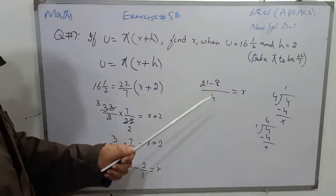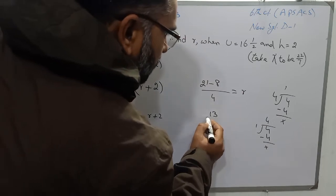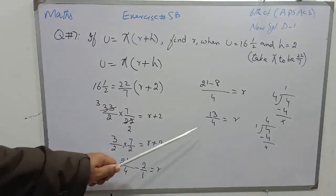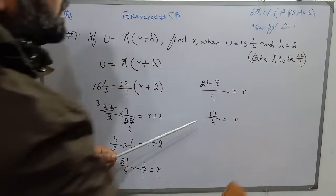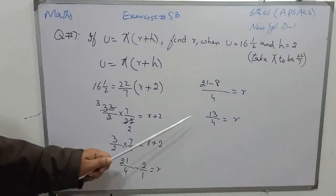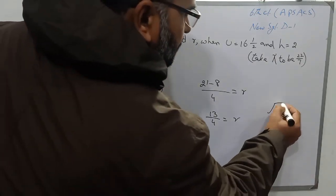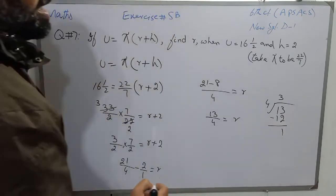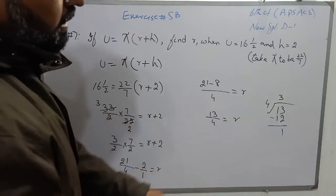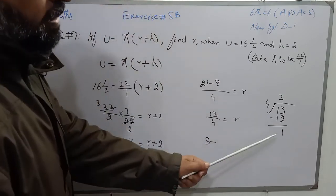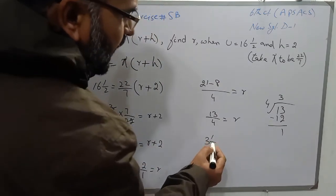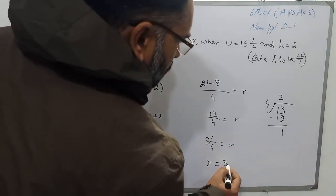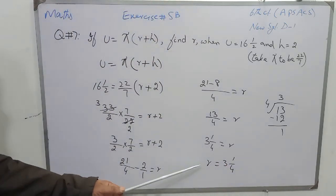Subtract 8 from 21 and we have 13, so 13 over 4 is equal to r. Now divide 13 by 4 to convert this improper fraction into a mixed number: 4 threes are 12, subtract 12 from 13 and we have remainder 1. The quotient is the whole number, the remainder is the numerator, and the divisor is the denominator. So r is equal to 3 whole number 1 over 4.